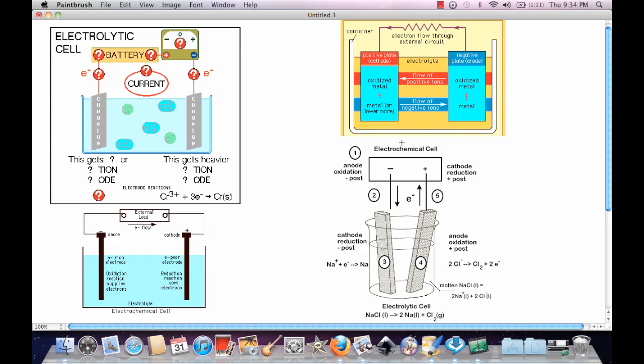Here's the container. Here's where the positive cathode plate is. Here's where the metal is oxidized or reduced. So metals are metals or lower oxides. And now the flow of negative oxidized electrons from the cathode is going to be a flow of negative ions.